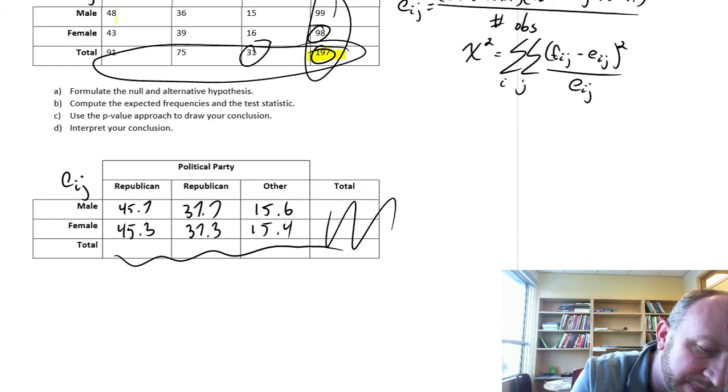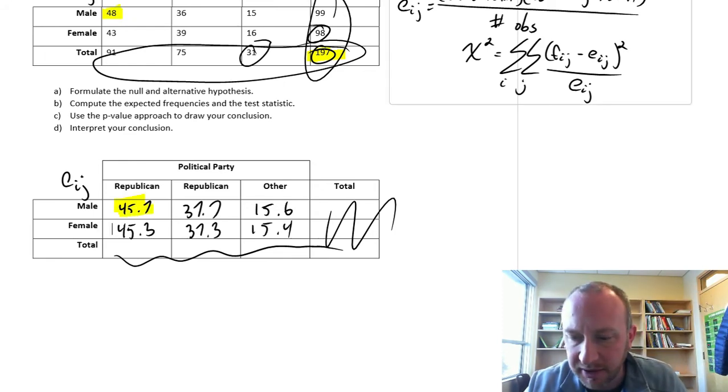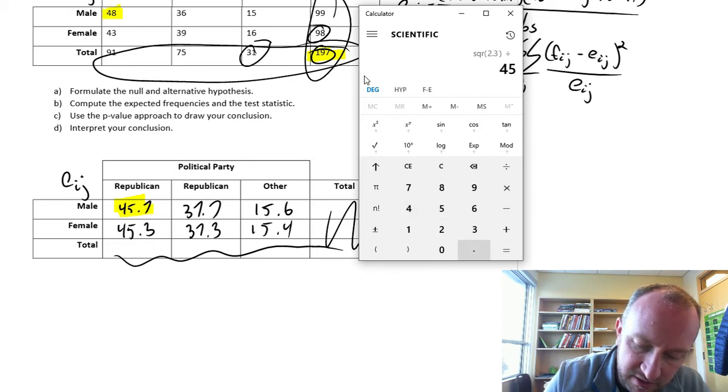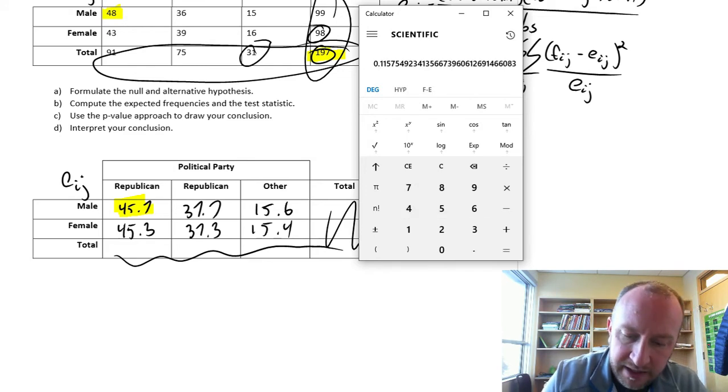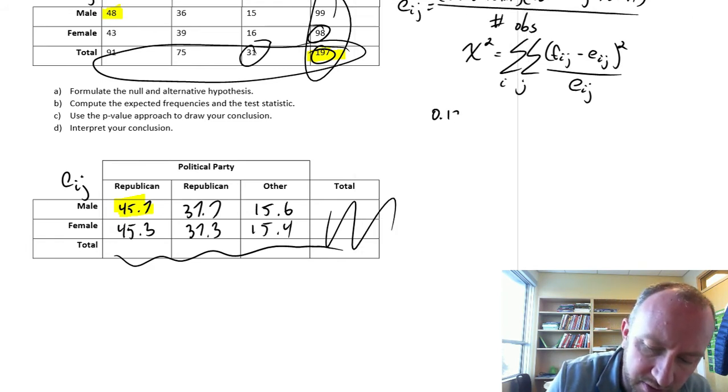First I'll do the male Republican. Here's my observed value and my relevant expected value. So this is 48 minus 45.7, squared, divided by 45.7. And we have, let's round it to 0.12.